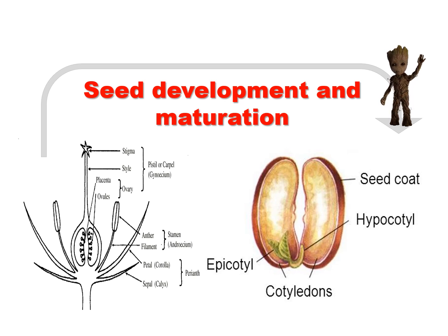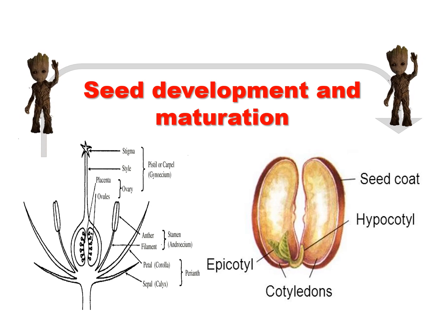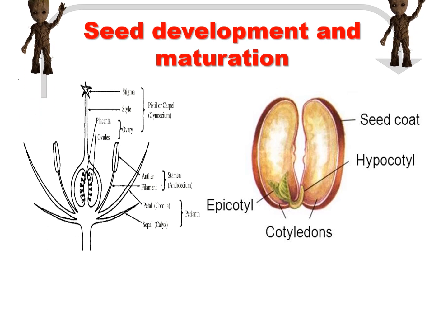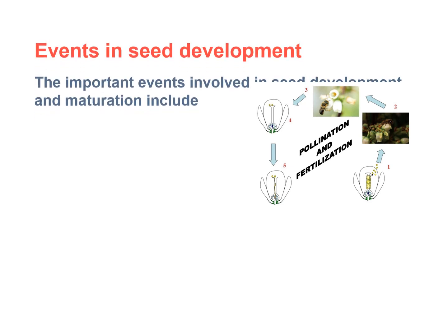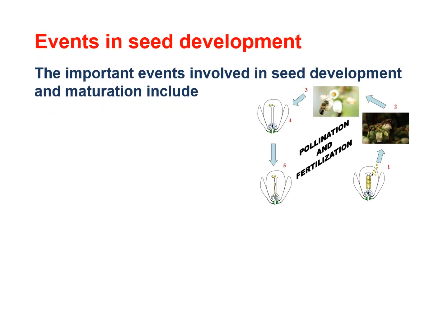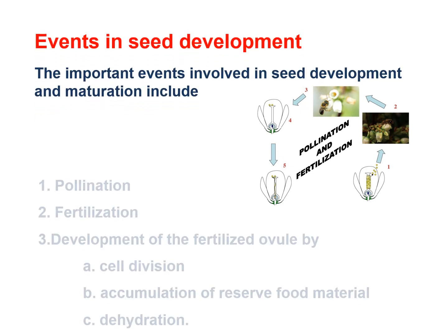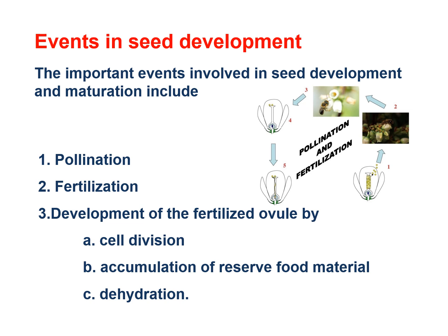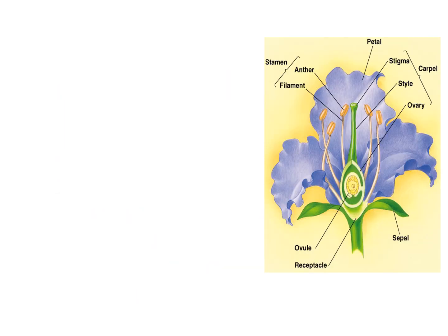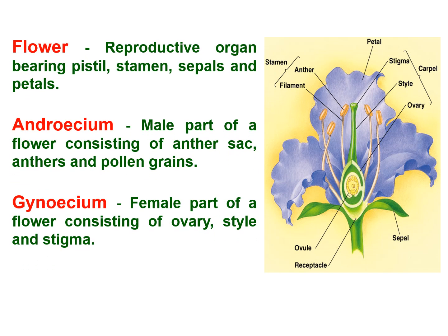Seed Development and Maturation. The important events involved in seed development and maturation include: pollination, fertilization, development of fertilized ovule by cell division, accumulation of reserved food material, and dehydration.